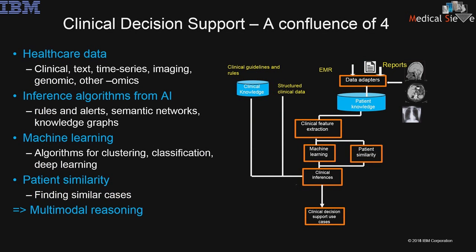Overall, clinical decision support has different perspectives. If you look at how it started, we see it as a confluence of at least four different directions: first, a variety of data sets — from structured clinical representations to textual, imaging, and multimodal data; second, inference algorithms from AI; third, traditional machine learning; and finally, patient similarity, which combines these areas into a paradigm called multimodal reasoning.